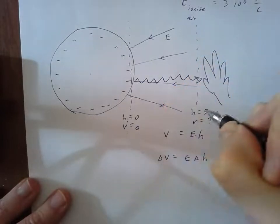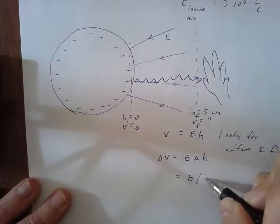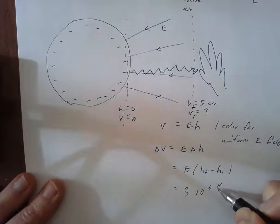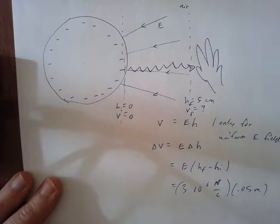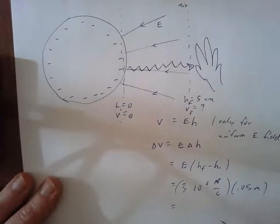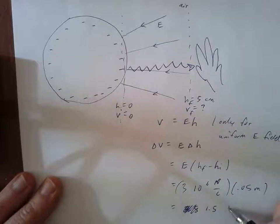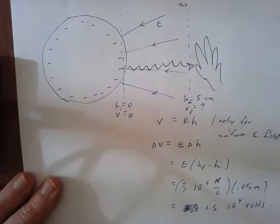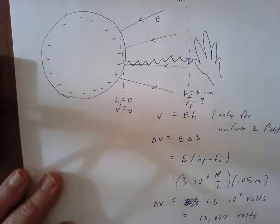Calling initial position I and final position F, the voltage difference is E times the height difference: height final minus height initial. We're assuming the electric field is 3 million newtons per coulomb, and the height difference is 5 centimeters, which is 0.05 meters. Multiplying those together gives a voltage difference of 1.5 times 10 to the 4th volts, or 15,000 volts — which is a pretty large voltage difference.